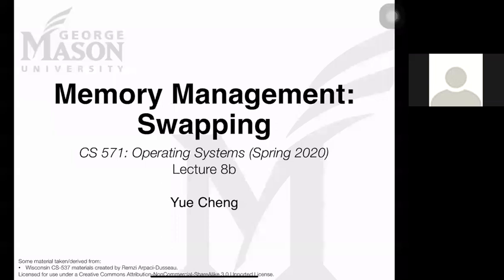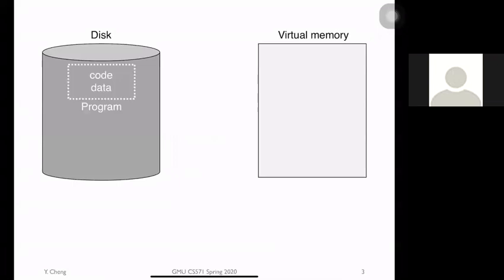In this video and the next video recording, we're going to talk about memory swapping, which is beyond the physical memory. As shown in this slide, let's assume we have a really simple computer system. This computer system has a hard disk drive, which is used to store and persist the data and programs. At the same time, it has a memory. What is shown over here doesn't reflect the memory, but instead shows a virtual memory.